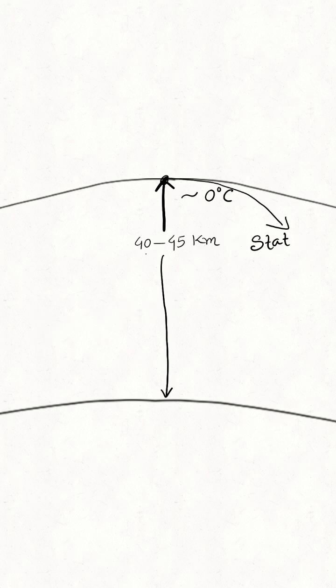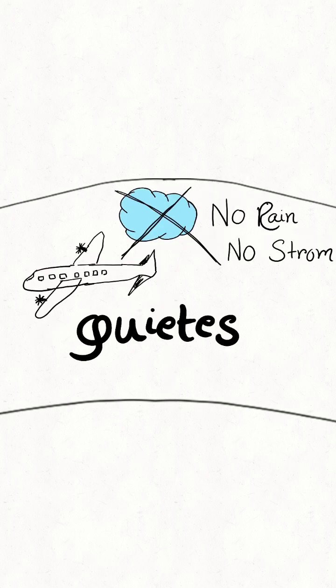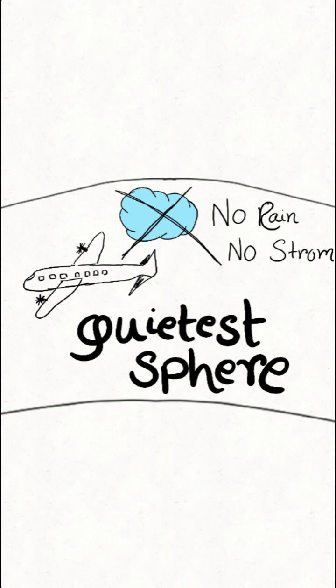The lowest temperature is zero degrees Celsius, and due to no convection current, no raining and storming take place here. So it is suitable for moving airplanes. It is known as the quietest sphere of our atmosphere.